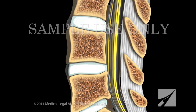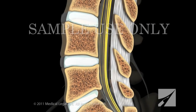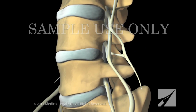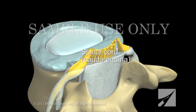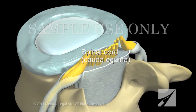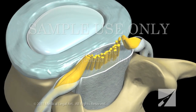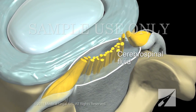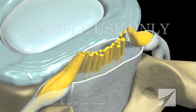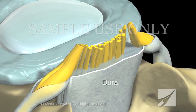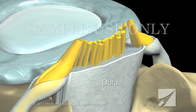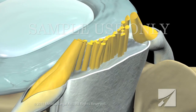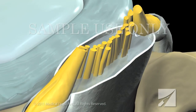The spinal cord, with its branching spinal nerves, is bathed in cerebrospinal fluid and surrounded by a protective membrane called the dura. Just outside this membrane is the epidural space.